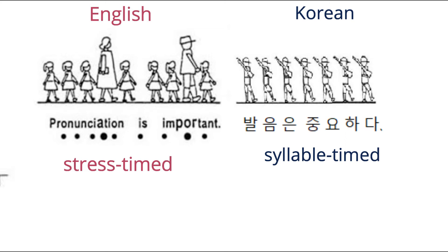English, on the other hand, is viewed as a stress-timed language, meaning that the stressed syllables occur at a regular interval. That is, the rhythm of English is created when a syllable in a certain spot in a phrase is stressed and the rest are unstressed, and when this pattern is repeated.